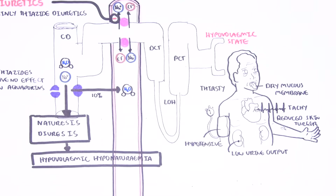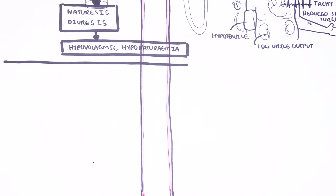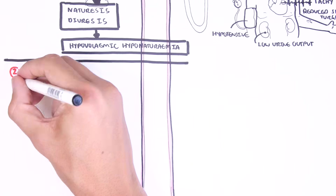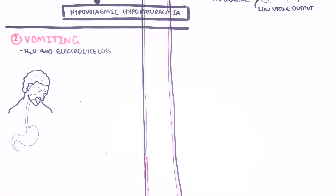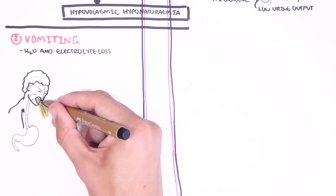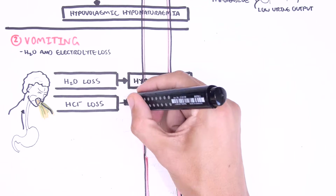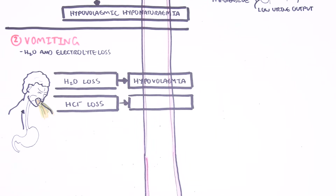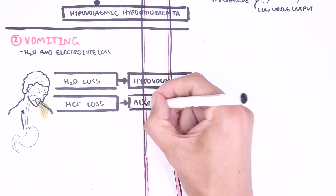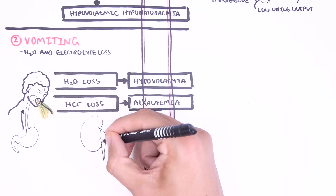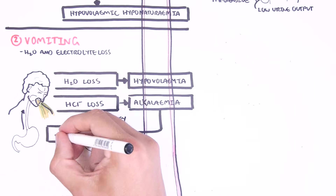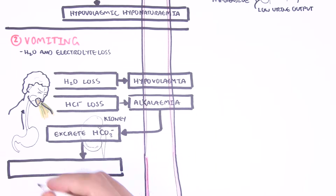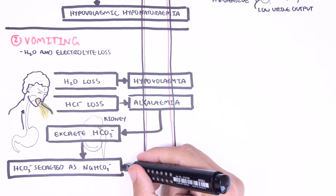Another cause of hypovolemic hyponatremia is vomiting. When you vomit, you lose water and electrolytes. Loss of water means hypovolemia. With vomiting, you can also lose acid from the stomach. When you vomit acid, this increases serum pH because you are losing protons — hydrogen. The kidneys will try to compensate by excreting bicarbonate with sodium, which increases sodium excretion.